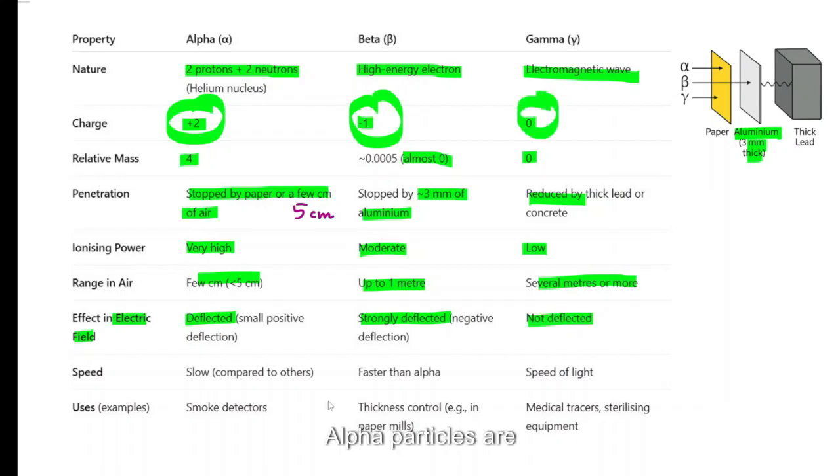Speed. Alpha particles are relatively slow, like it's still fast, but relatively. Beta faster than alpha, gamma radiation go at the speed of light, which is 3 times 10 to the power of 8 meters per second.